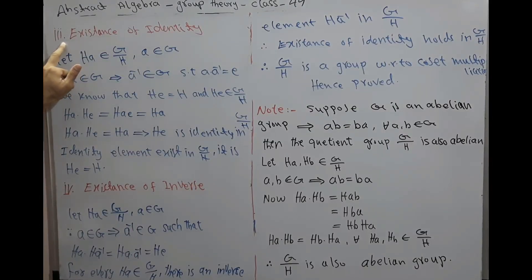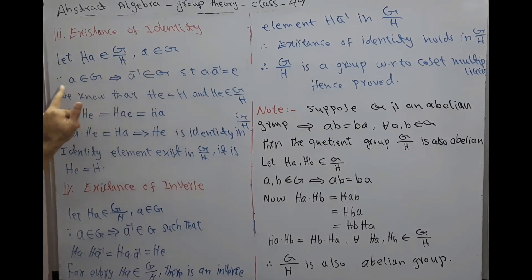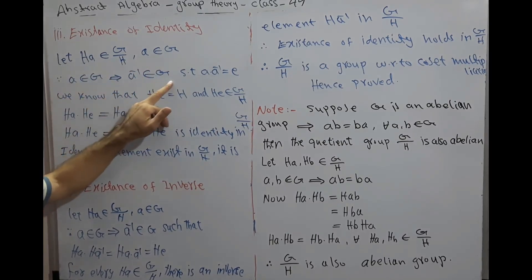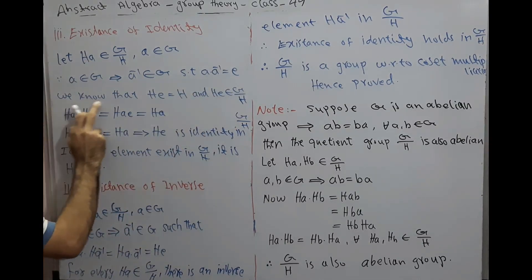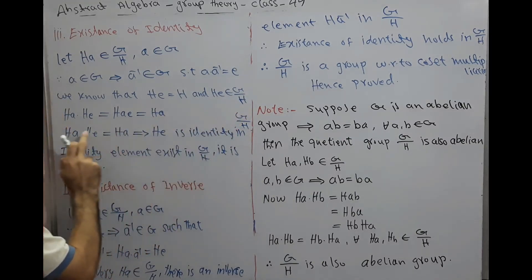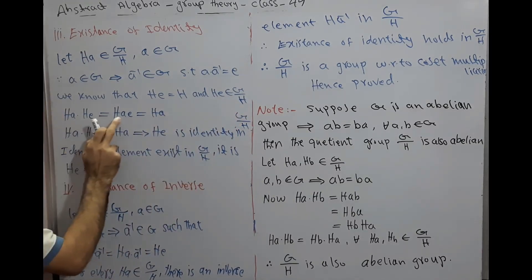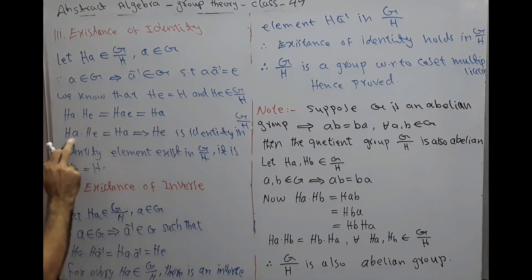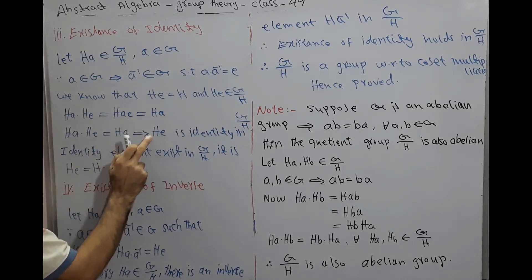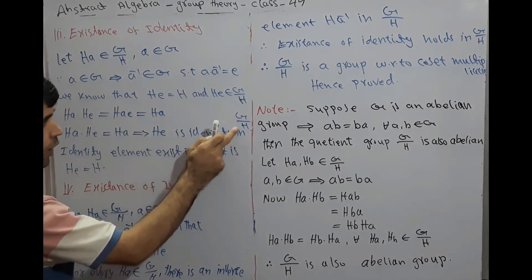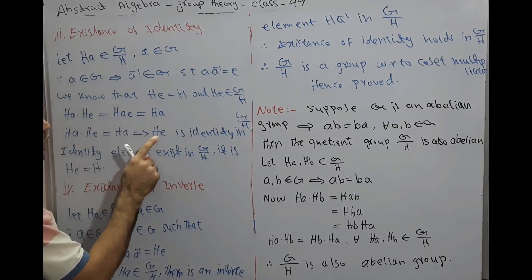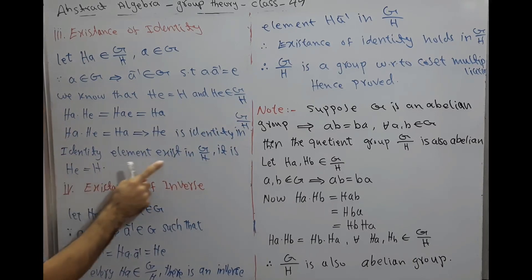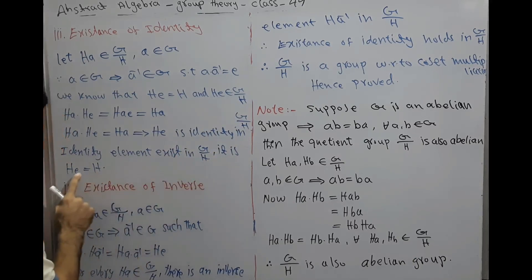Third, existence of identity. Let HA belong to G by H, so A belongs to G. Since A belongs to G, A-inverse also belongs to G because G is a group, and A·A-inverse equals E, the identity element of G. We know HE equals H and HE belongs to G by H. Now HA·HE = H(AE) = HA. This implies HE is the identity in G by H, because multiplying HA by HE gives HA. Therefore the identity exists in G by H and it is HE equal to H.